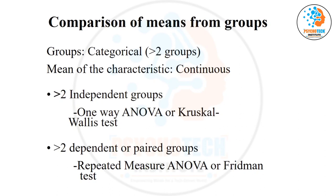There will be two to three exam questions on hypothesis testing. They may ask about chi-square, correlation, or t-test and ANOVA. They will give you a scenario with all variables defined and ask which test is appropriate — you just choose the correct test based on the conditions.